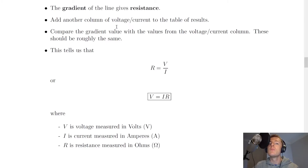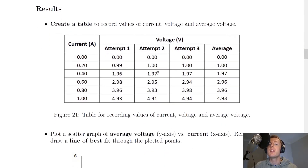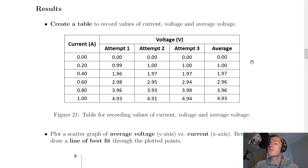This should give us a value for the resistance equal to the resistance value of the resistor used in the Ohm's Law experiment. What you could then do is add another column of voltage divided by current to the table of results. Looking back at our table for the Ohm's Law experiment — with average voltage values and current values — if we add a column of voltage divided by current, the gradient value would be roughly equal to all those values, excluding the 0, 0 point.